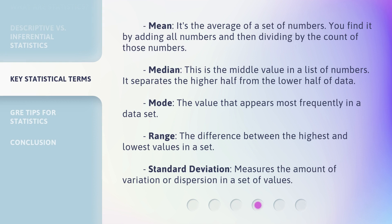The mean is the average of a set of numbers, found by adding all numbers and dividing by the count. The median is the middle value in a list, separating the higher half from the lower half. The mode is the value that appears most frequently in a data set. The range is the difference between the highest and lowest values. Standard deviation measures the amount of variation or dispersion in a set of values.